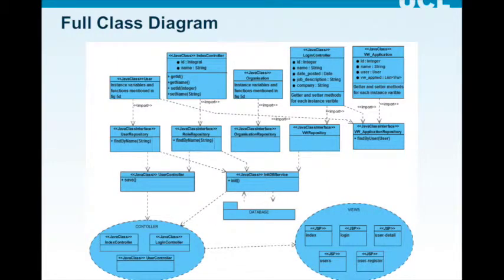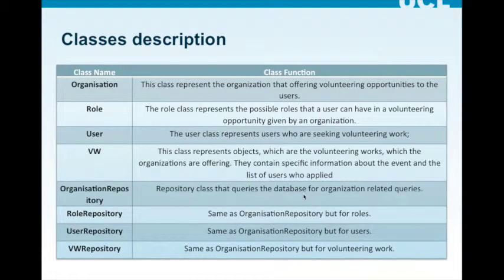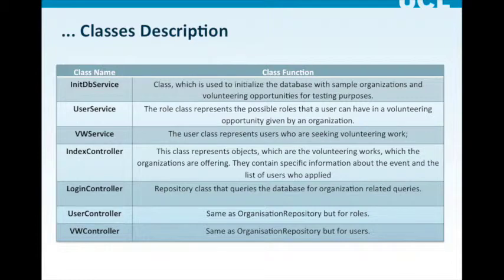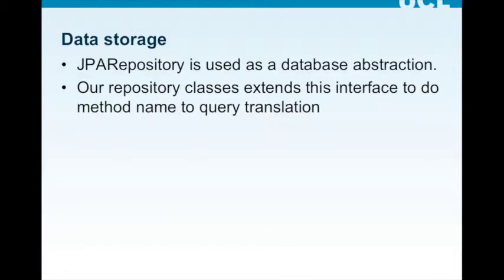This is our overall class diagram. The model classes, controller classes, and views are represented in JSP files. Three classes are the entity classes representing the various roles. The VW class represents volunteering opportunities. The next four classes are the repositories, which manage the entities. The InitDB service initializes the database. The service classes implement the repository classes that store, save, and retrieve entities. The controller classes provide mapping to various pages and send commands to change the view. JPA Repository is used as a database abstraction; our repository classes extend this interface to do method-name-to-query translation.